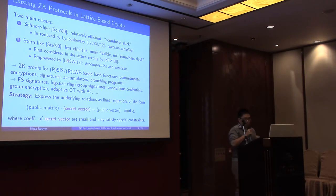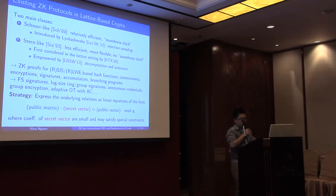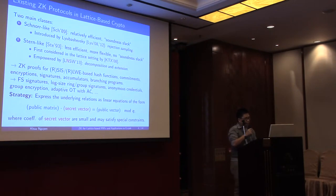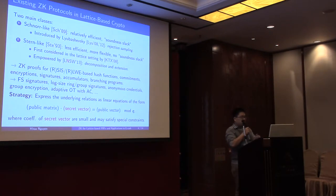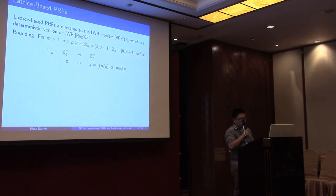The common strategy for both classes of protocols is to express the underlying relations as equations of the form: a public matrix multiplied by the secret vector equals a public vector modulo some q, where the coefficients of the secret vector are small, and in the case of Stern-like protocols may also satisfy some special constraints.